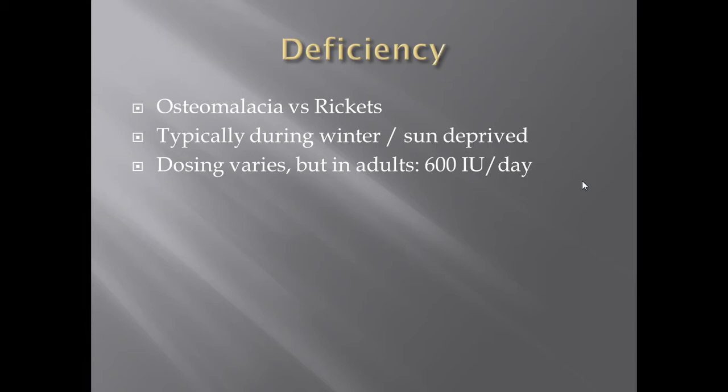What does deficiency in vitamin D look like? There are two different things: osteomalacia and rickets. Osteomalacia is the adulthood form, and rickets is the childhood form of the same condition — a vitamin D deficiency, just named differently depending on the patient's age. You'll see deficiency typically during winter months because of lack of sunlight, in sun-deprived patients, or in patients with very little vitamin D intake. For example, if a breastfeeding mother has vitamin D deficiency, the child will also have it — you'd call the mother's condition osteomalacia and the child's rickets.